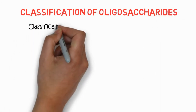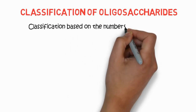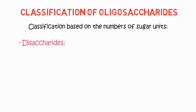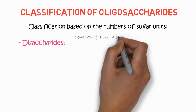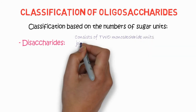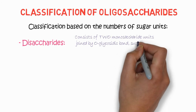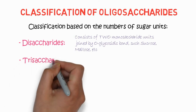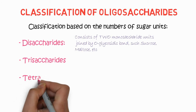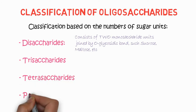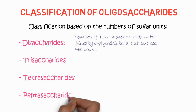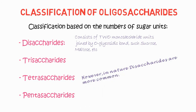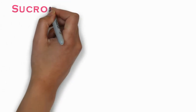The classification of oligosaccharides is based on the number of sugar units. A disaccharide consists of two monosaccharide units joined by an O-glycosidic bond — examples include sucrose and maltose. A trisaccharide contains three sugar units, a tetrasaccharide four, a pentasaccharide five, and so on up to ten units. In nature, disaccharides are the most common.